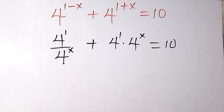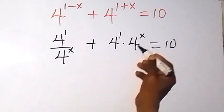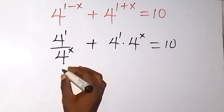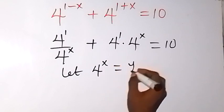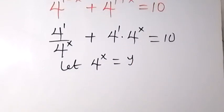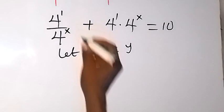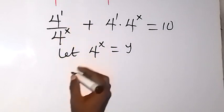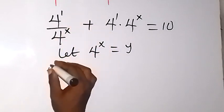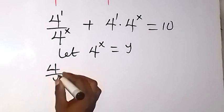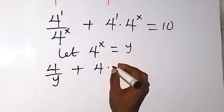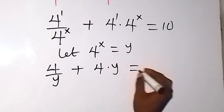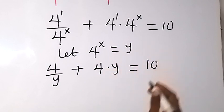From there, we let a letter represent the repeated term. Since we have 4 raised to power x appearing, let 4 raised to power x equal y. Then we have 4 over y plus 4 times y equals 10, replacing both instances of 4 raised to power x.